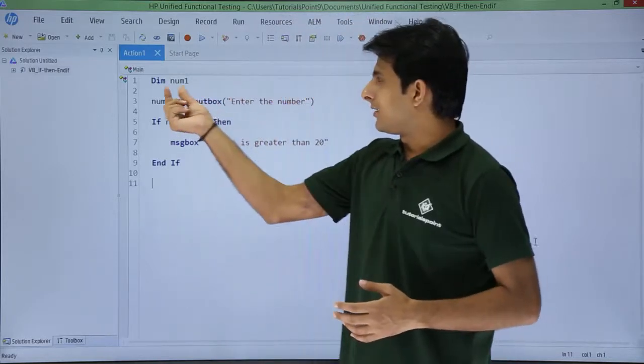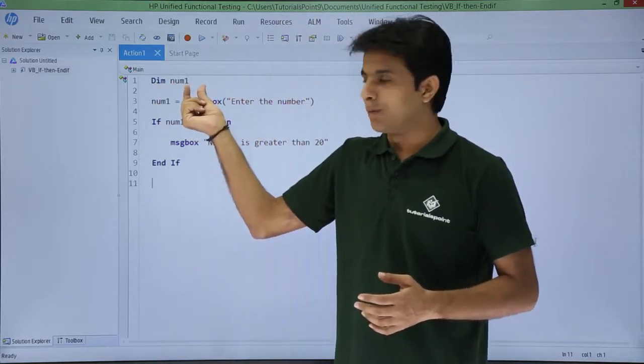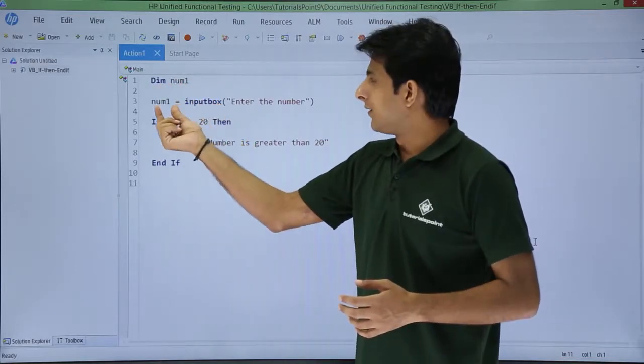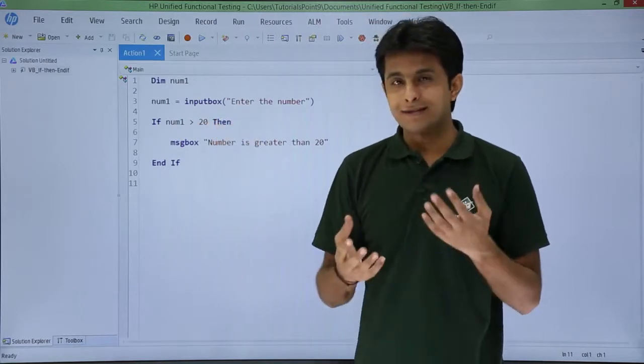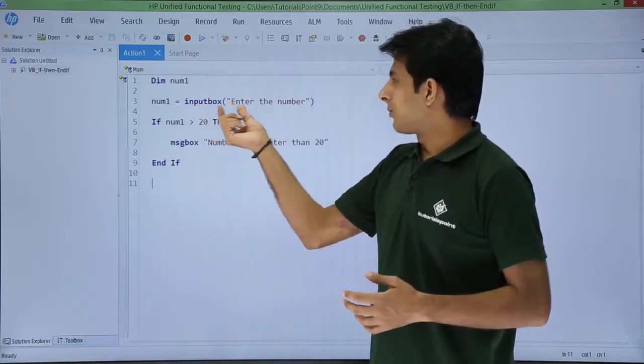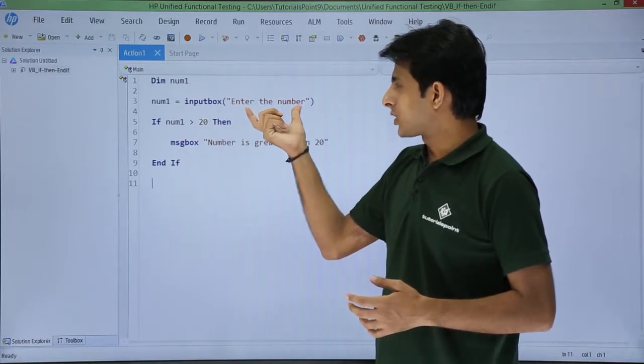For that, I have declared a variable DIM num1. DIM is a statement to declare a variable, and num1 is the variable name. num1 equals InputBox. I am asking the user to input some number. InputBox 'Enter the number' - that is the text which will be displayed.